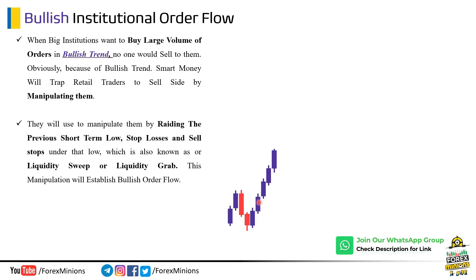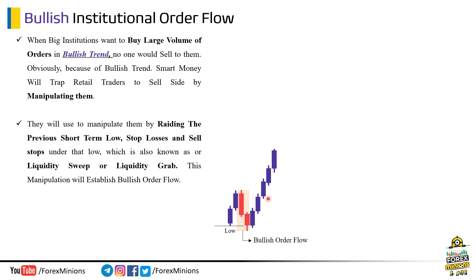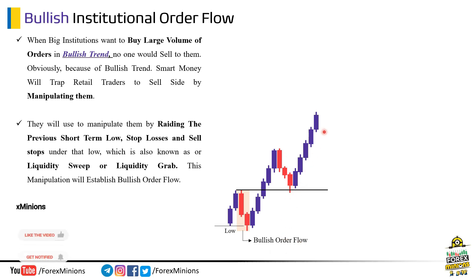You notice how big institutions manipulate retail traders by raiding the previous short-term low, stop losses, and sell stops under that low — which is also known as a liquidity sweep or liquidity grab. This manipulation will establish bullish order flow. Note this red marked area: these selling candles actually created a bullish side order flow for smart money. These institutions created a fake sell move from this level and quickly turned the market to the bullish side. These institutions will divert price to this base level just to mitigate their sell orders. Once they mitigate this order flow — which is known as bullish institutional order flow — they will start buying again. Notice how price came back into this zone and moved higher once again.